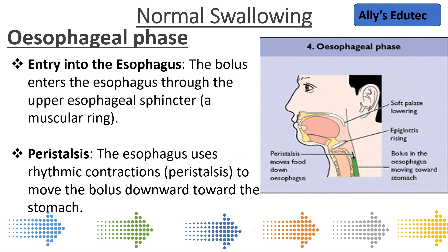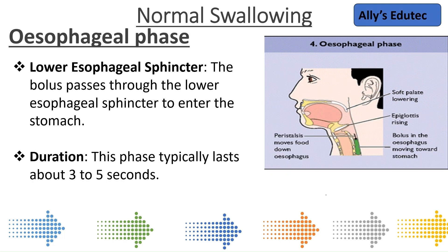Then the esophagus uses peristalsis — a rhythmic contraction called peristaltic movement. The bolus moves downward to the stomach. From the back of the throat the food enters into the esophagus, and from the upper esophageal sphincter the food is pushed down with the help of these rhythmic contractions into the stomach. From there it passes through the lower esophageal sphincter and enters into the stomach. That is what happens in the esophageal phase.